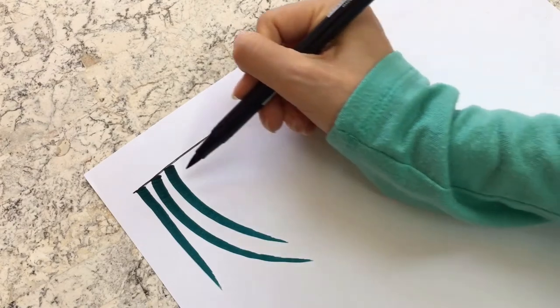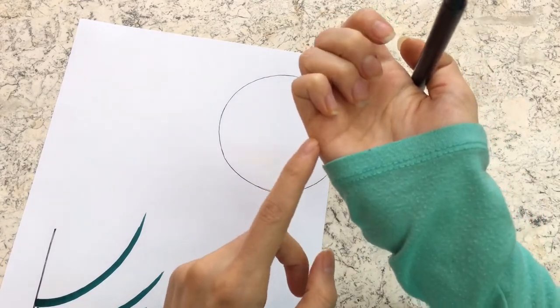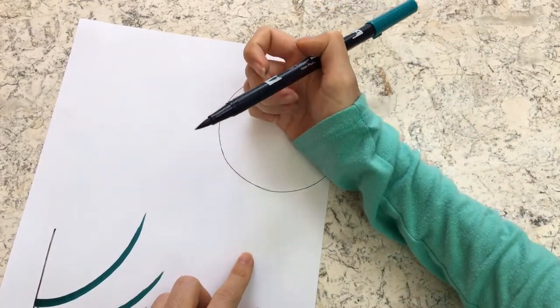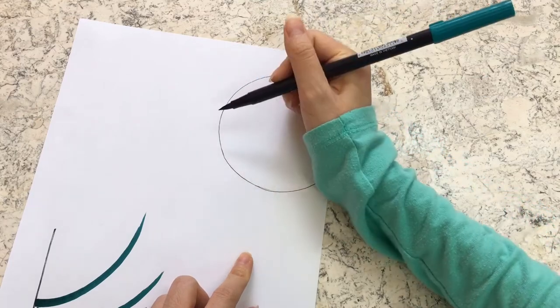You can create shorter strokes by lifting your brush pen from the paper sooner. By changing the position of this part of your hand in relation to the edge of the circle, you can change the angle of the spokes coming out of the circle.